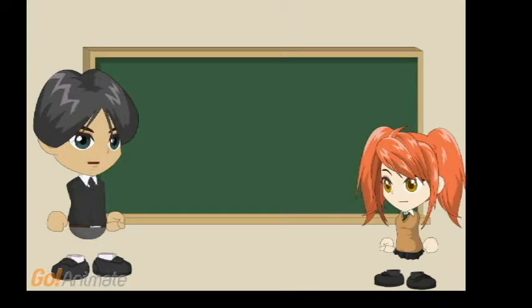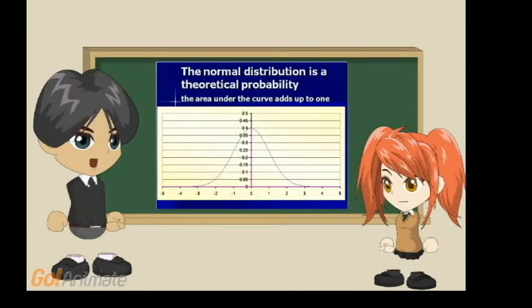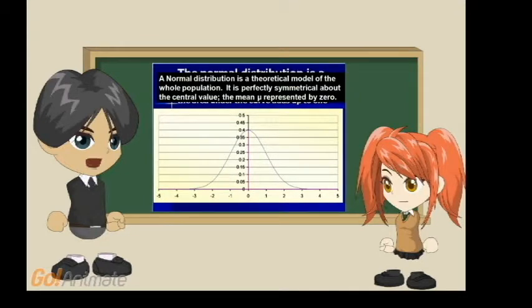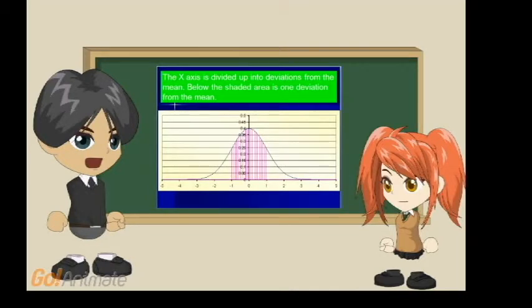Now, let's go to the normal distribution of the theoretical probability. A normal distribution is a theoretical model of a whole population. It is perfectly symmetrical about a central value, the mean represented by 0. In this example, the x-axis is divided up into deviations from the mean.